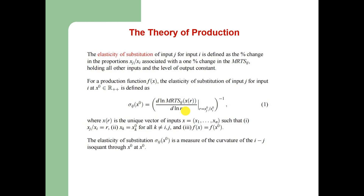For a production function f(x), the elasticity of substitution of input j for input i at point x-naught in the strictly positive Euclidean space is defined by equation number one. Here x_r is the unique vector of inputs — x = (x1, ..., xn) — such that: (1) xj/xi = r, that is, the proportion of the two inputs; (2) x_a = x_k-naught for all k not equal to i,j; and (3) f(x) = f(x-naught). The elasticity of substitution is therefore a measure of the curvature of the ij isoquant through x-naught.